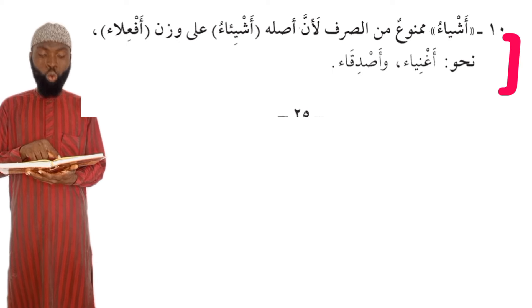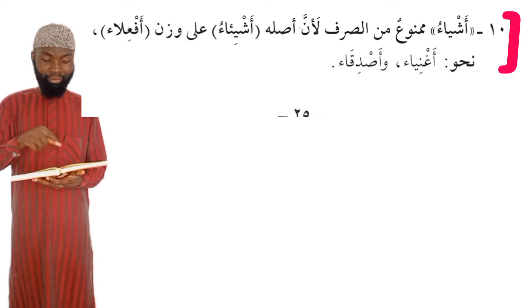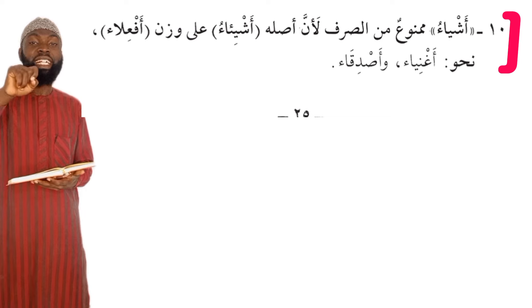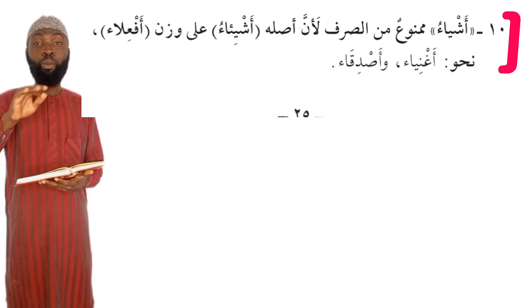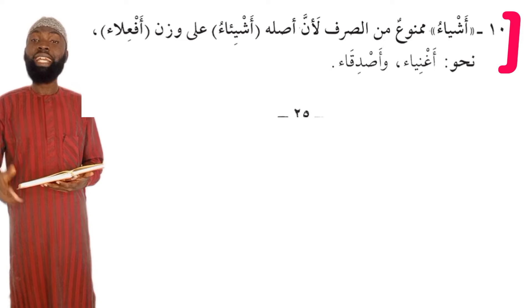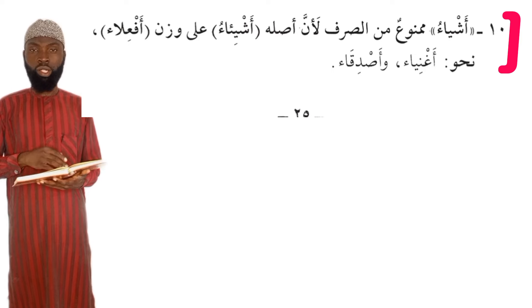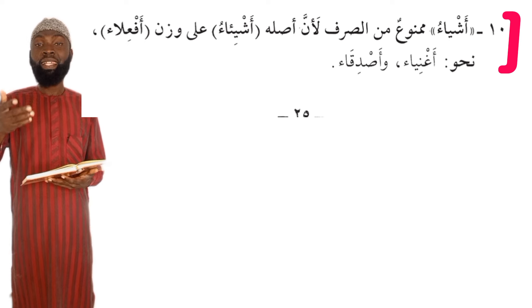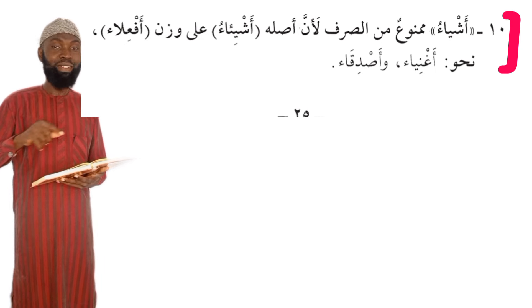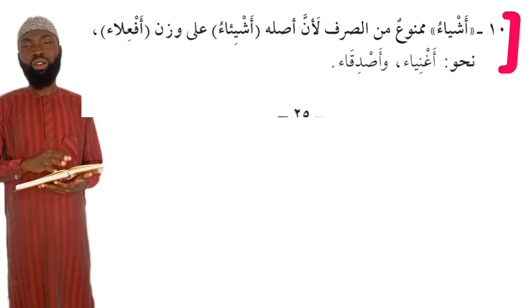Here we have a diptote example. The origin of this word comes under the scale of Af'ila'u, and whatever comes under this scale is known to be a diptote — Mamnu'u Minasaruf. Another example which looks like Ashiyahu is the word Agniya'u, meaning 'those who are rich.' So I will not say 'I passed by the rich ones' as Marartu bi Agniya'i; rather, I will say Marartu bi Agniya'a. Similarly, Sallamtu alal Agniya'a, not Agniya'i.